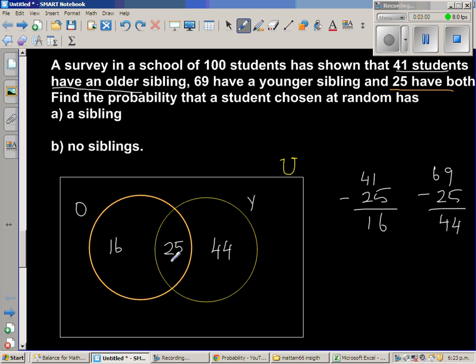So what will come in the rectangle? So let's add these three numbers. So 16 plus 25 plus 44. So this is 6 plus 5 is 11 plus 4 is 15. Remain the 1, 2, 4, 8. So there are 85 students who have older or younger siblings.